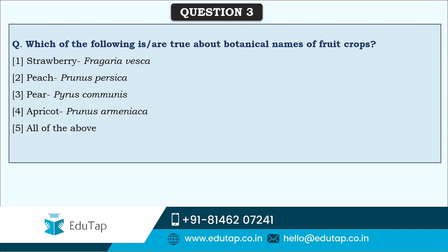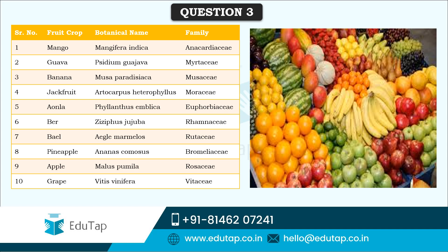Next is botanical names of fruit crops. Which of the following are true? Strawberry — Fragaria vesca; Peach — Prunus persica; Pear — Pyrus communis; Apricot — Prunus armeniaca. All of these are correct. Other botanical names: Mango — Mangifera indica, family Anacardiaceae; Guava — Psidium guajava, family Myrtaceae; Banana — Musa paradisiaca, family Musaceae; Jackfruit — Artocarpus heterophyllus, family Moraceae.